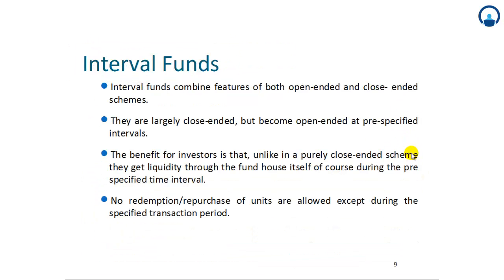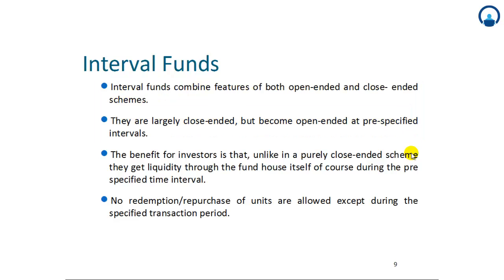Interval funds combine features of both open-ended and close-ended schemes. They are largely close-ended but become open-ended at pre-specified intervals. The benefit for investors is that, unlike in a purely close-ended scheme, they get liquidity through the fund house itself during the pre-specified time interval. No redemption or repurchase of units is allowed except during the specified transaction period.